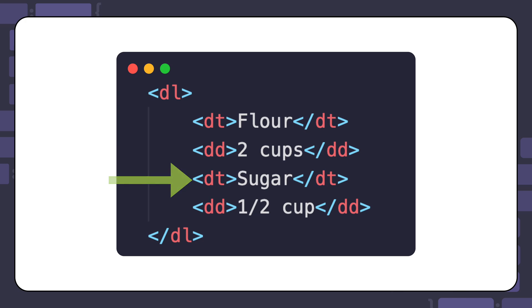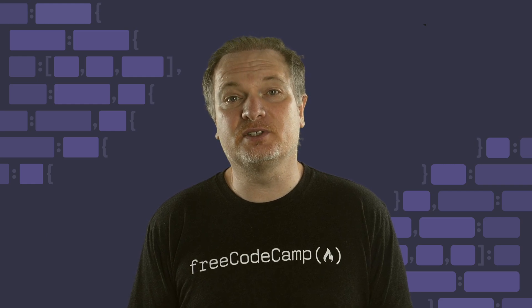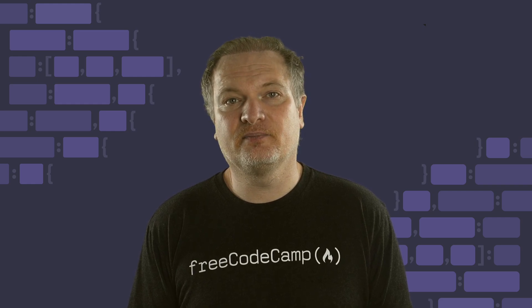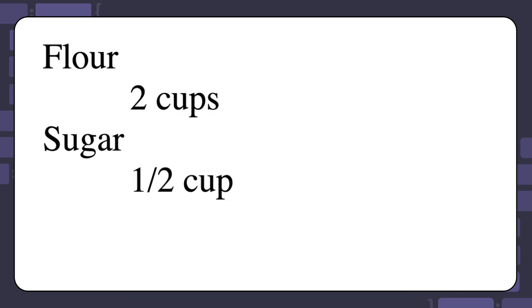In this case, the recipe has only two ingredients. But if there were more, the same structure could be repeated throughout the description list. This is what you will see in the browser: the ingredients are aligned to the left, while the measurements are indented to separate them visually.